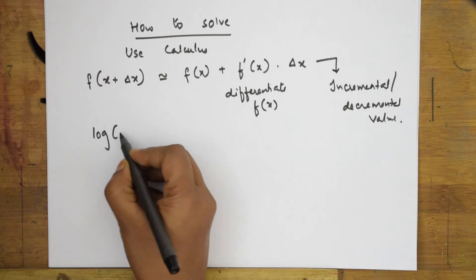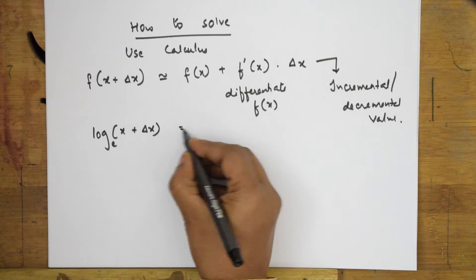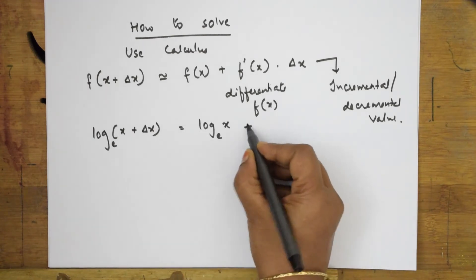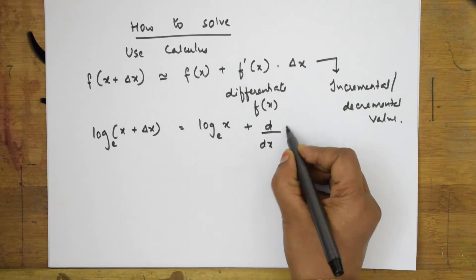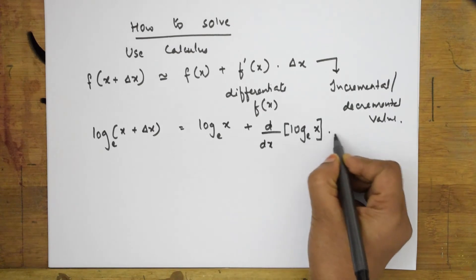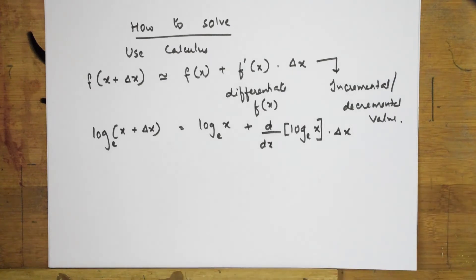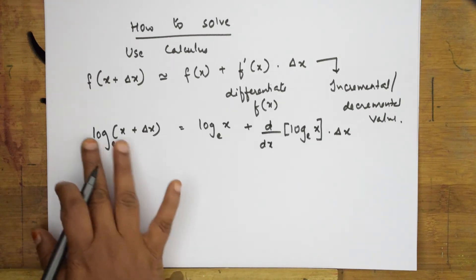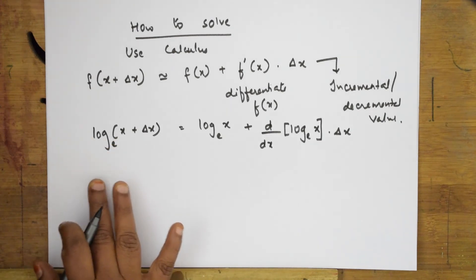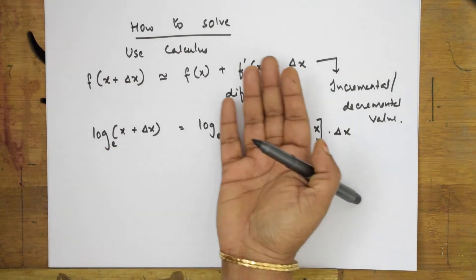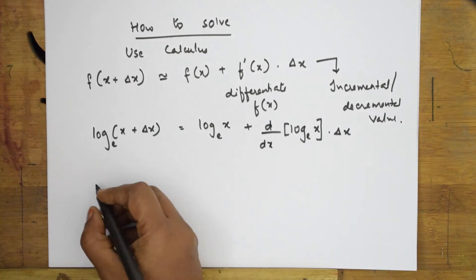Which is equal to log x base e plus d/dx log x base e into Δx. Now see, this is a standard value, but we try to write it in the log base 10. Whatever value we find in this differentiation, we try to write it in the base 10, natural log. This is the natural log, we write it in the log 10 when we study.